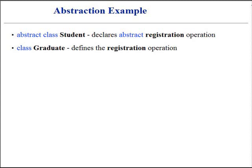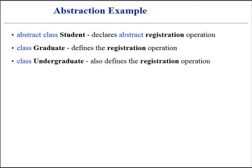Likewise, the programmer of the undergraduate student class is also forced to redefine the registration operation. In summary, abstraction is a way to remind the programmer about the missing operation in a superclass.